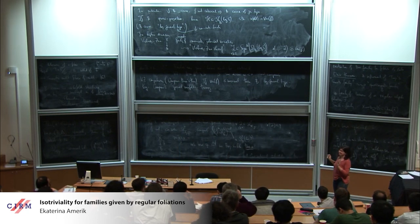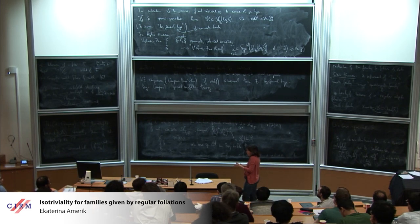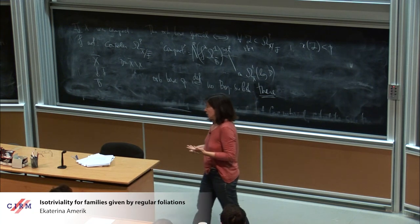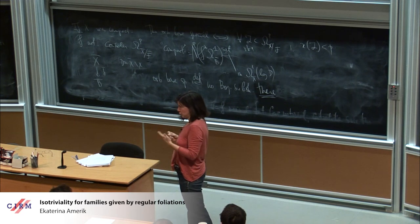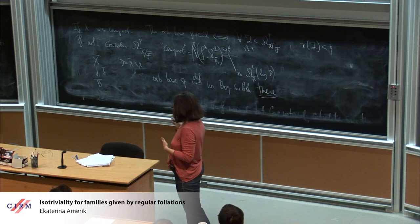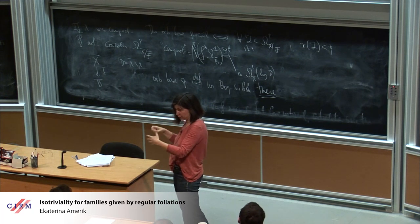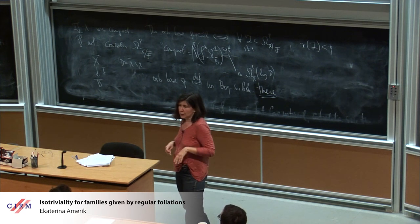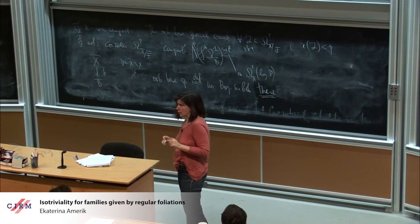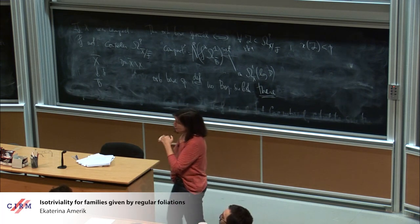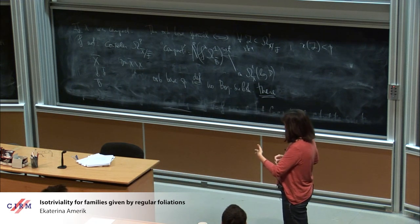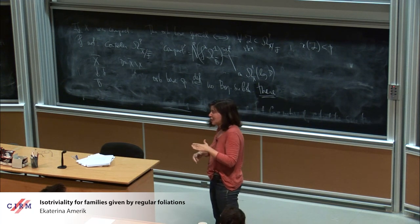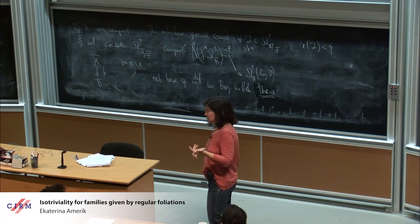The proof is quite technical but the idea is simple. On our base, you don't really have a Viehweg-Zuo sheaf, because there are multiple fibers and the Viehweg-Zuo sheaf exists only on the base of a smooth family. But we are able to do a simple covering trick which allows us to forget about multiple fibers.